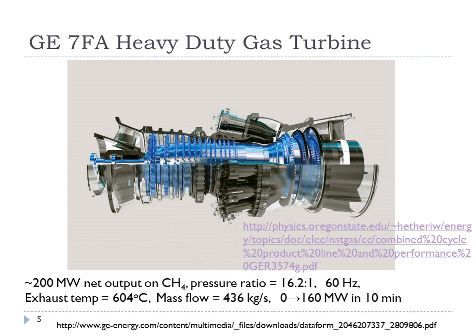This particular gas turbine has about 200 megawatts of output when run on natural gas, with a pressure ratio of 16.2 to 1, meaning the pressure in the combustor is about 16 atmospheres. It's a 60 Hz version for the US. The exhaust after the turbine expander is about 600 degrees Celsius, and nearly half a ton of gas flows through it per second.